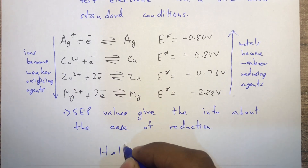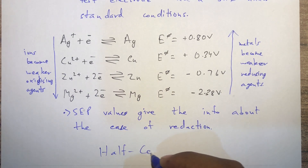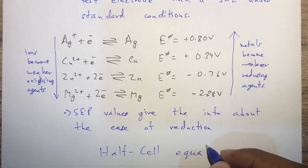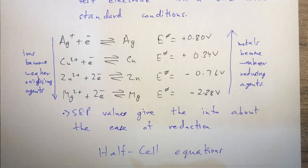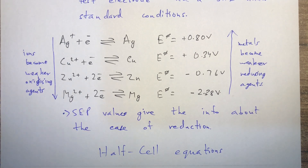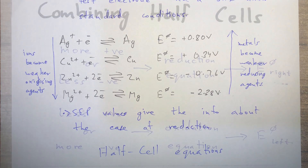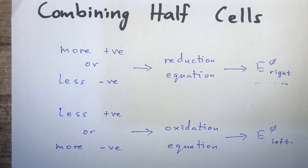One more thing to add: all of these equations are called half-cell equations. These are the equations for the reaction happening at any one electrode. To make one whole cell, we add two of these half-cell equations together. Next, we'll look at combining half cells.